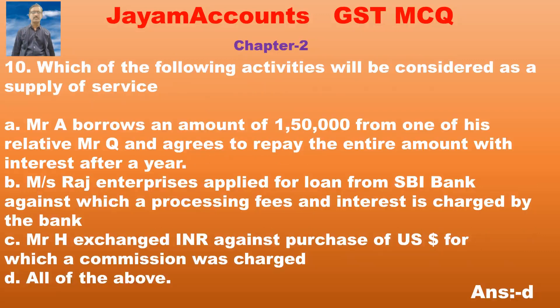Question number 10: Which of the following activities will be considered as a supply of services? Option A: Mr. A borrows an amount of 150,000 from his relative Mr. Q and agrees to repay the entire amount with interest after a year. Option B: Raj Enterprises applied for a loan from SBI bank against which a processing fee and interest is charged by the bank. Option C: Mr. Hutch exchanged Indian rupees for US dollars for which a commission was charged.